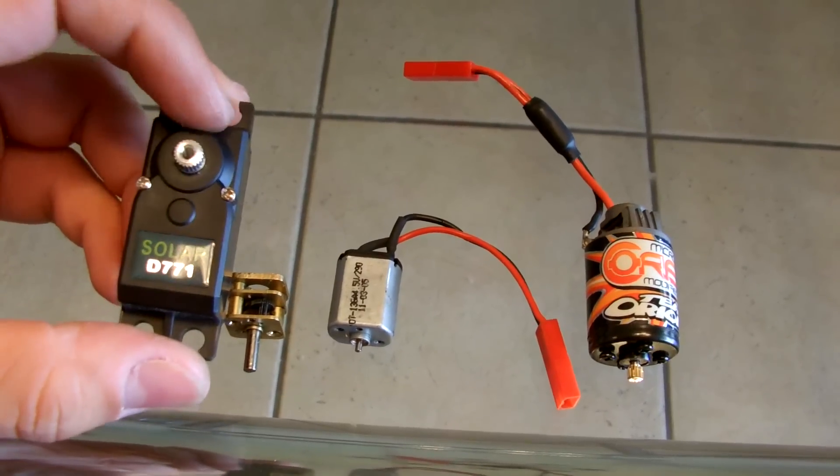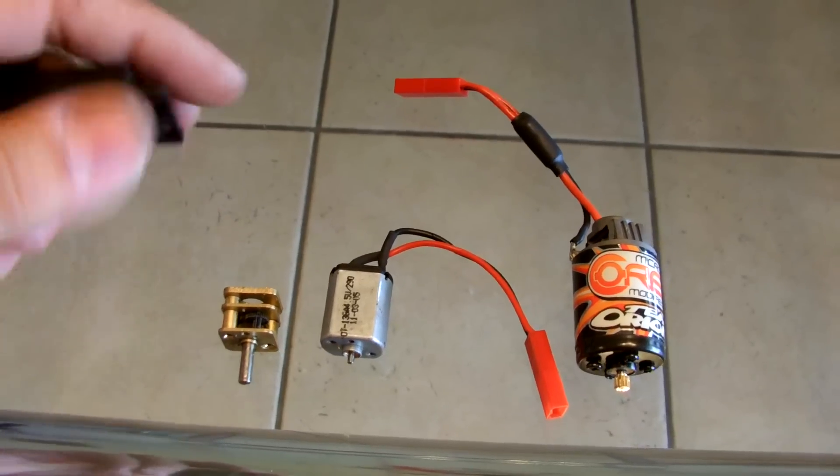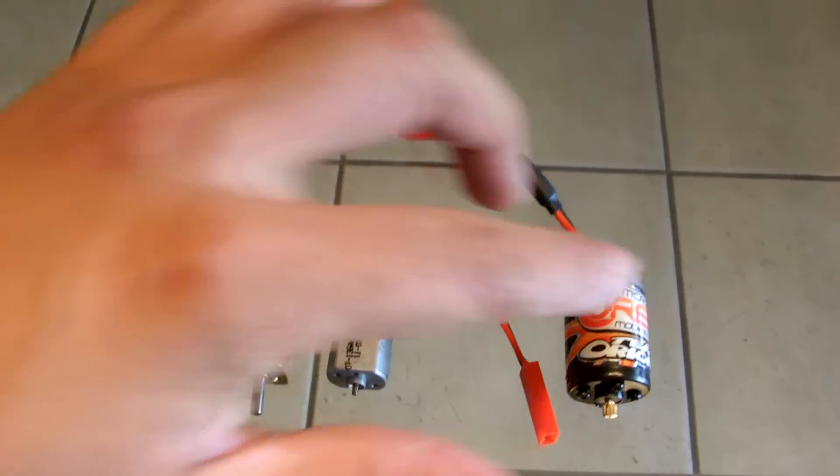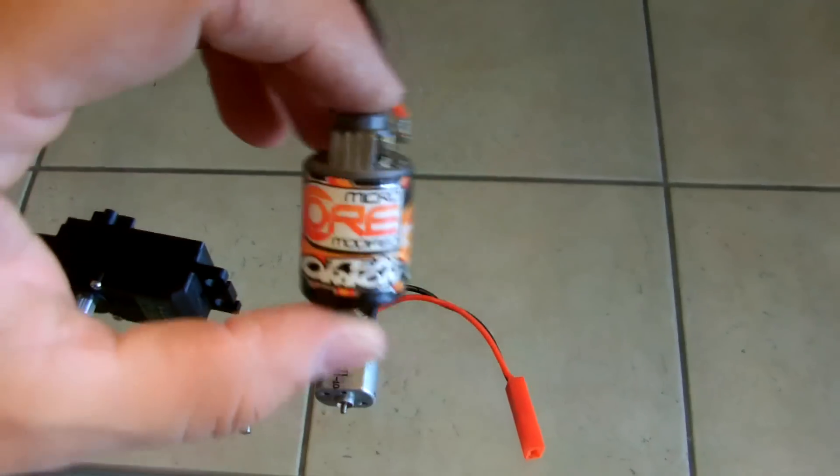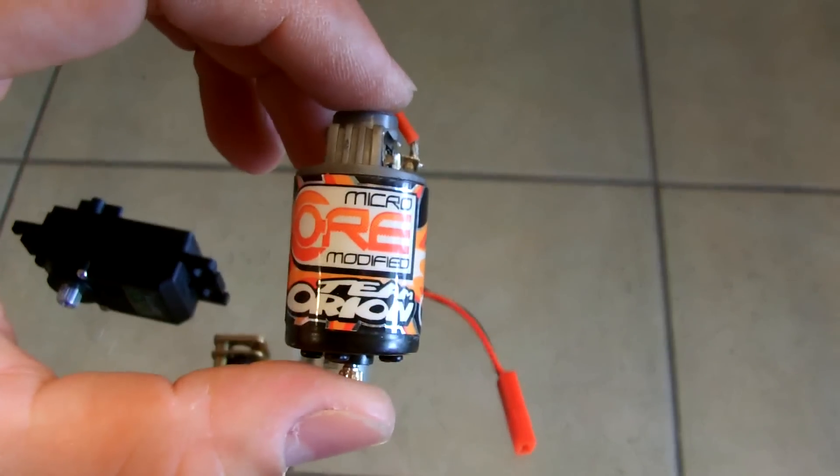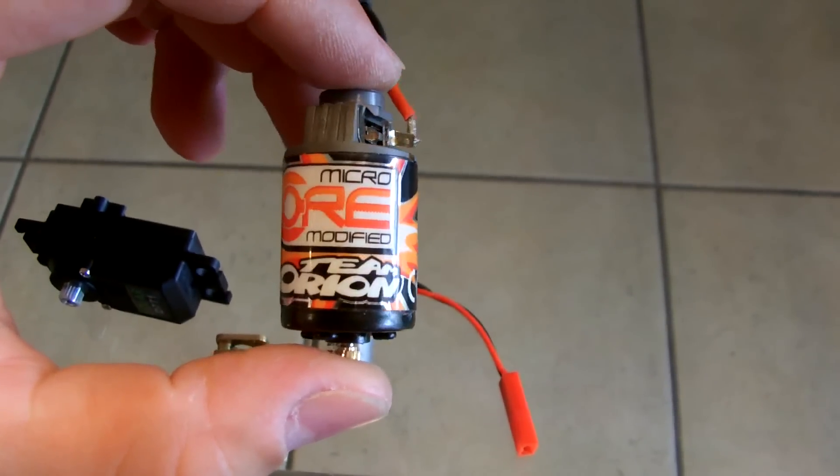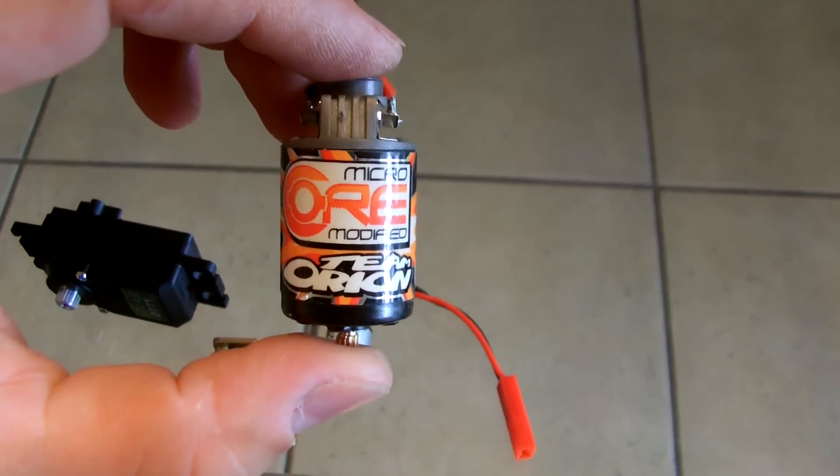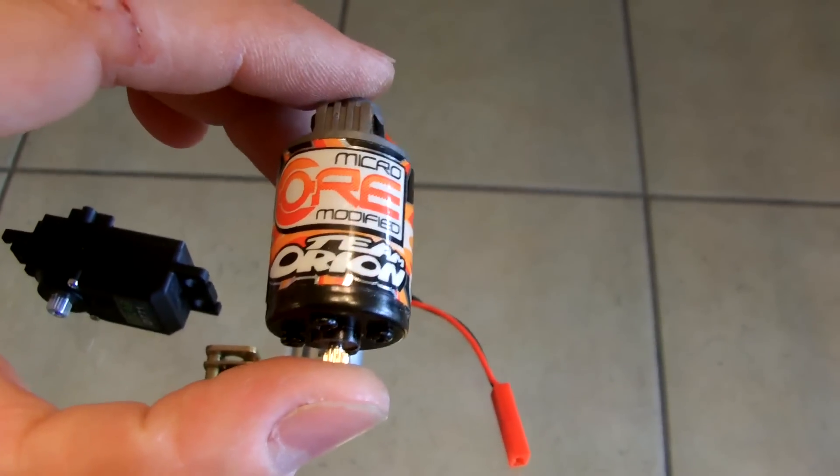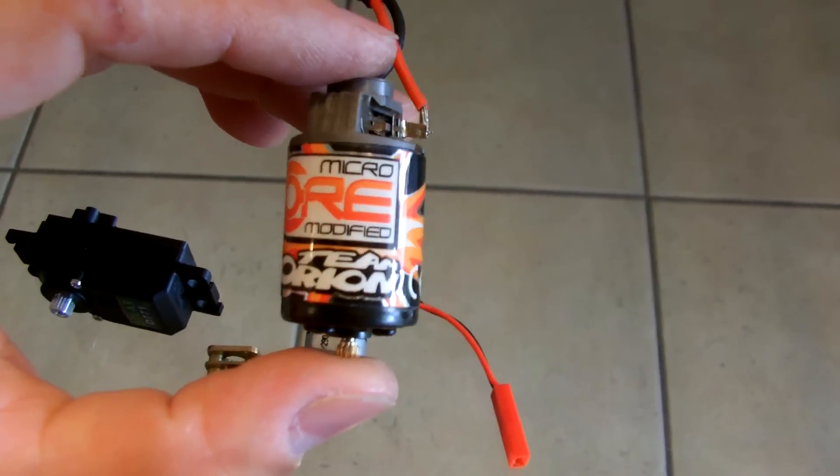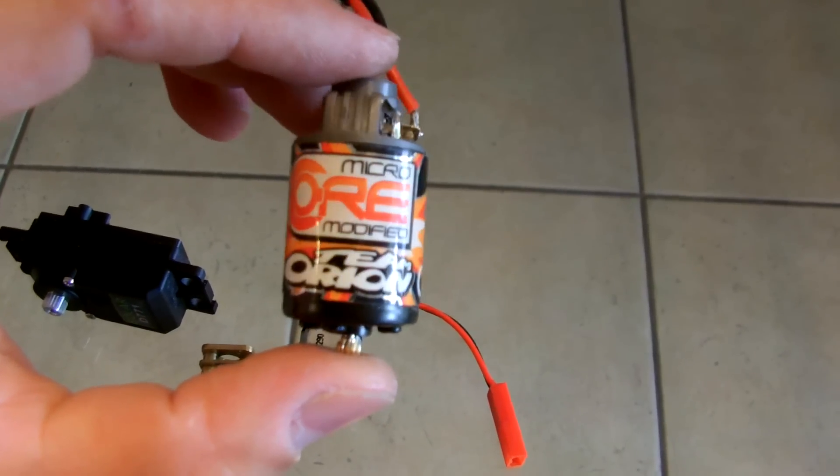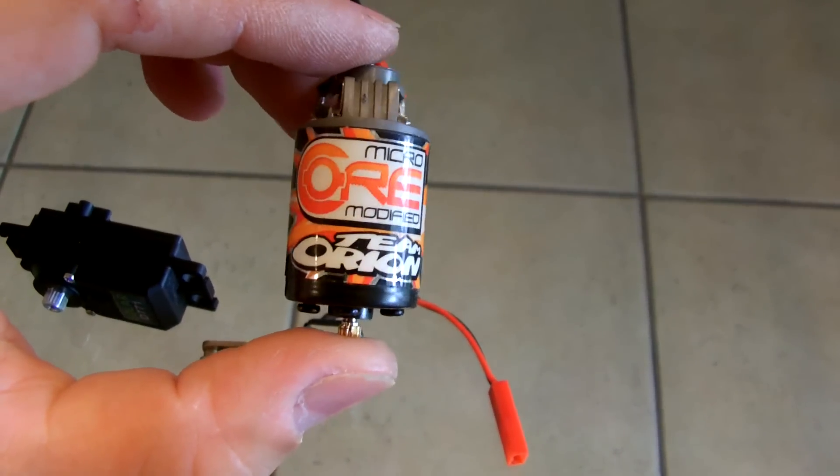this servo and mate it to this bigger motor, a lot bigger than the motor that was in it. It's a lot stronger than the cordless motor that came from it. I've tested it and the ESC from a Sumo crawler is able to move it. This is a Micro Core modified motor from Team Orion.